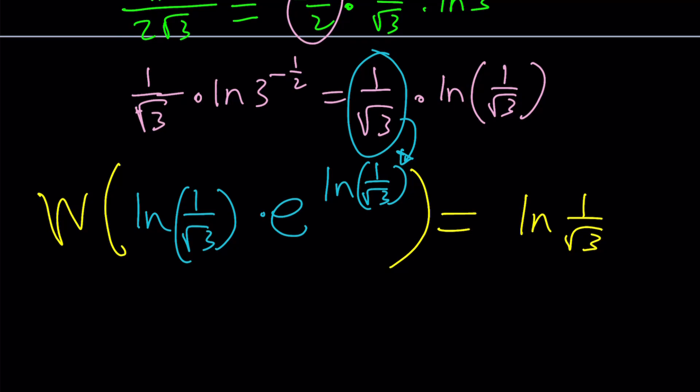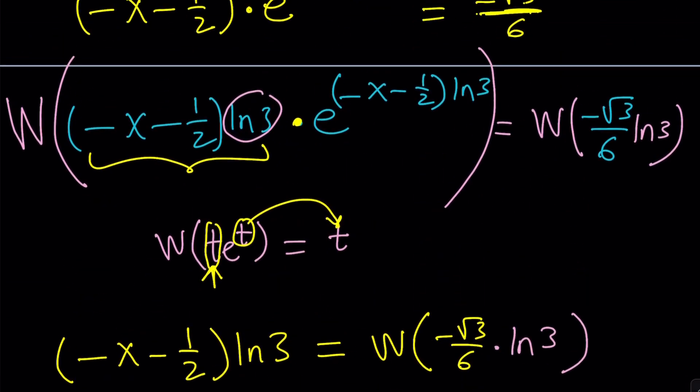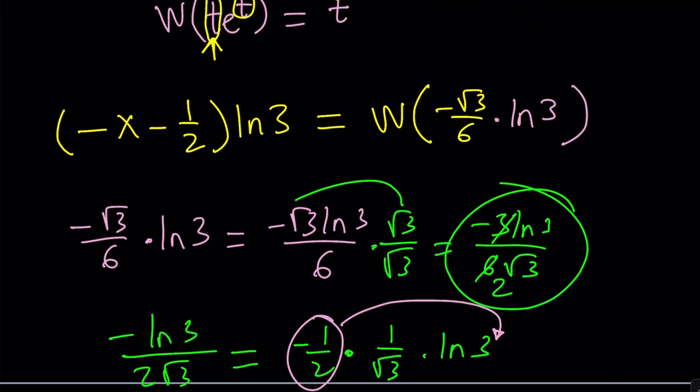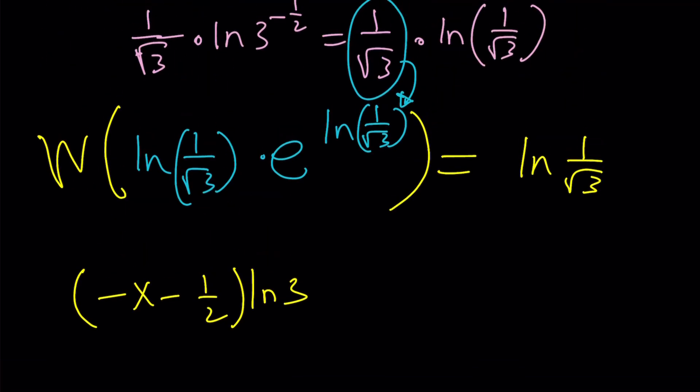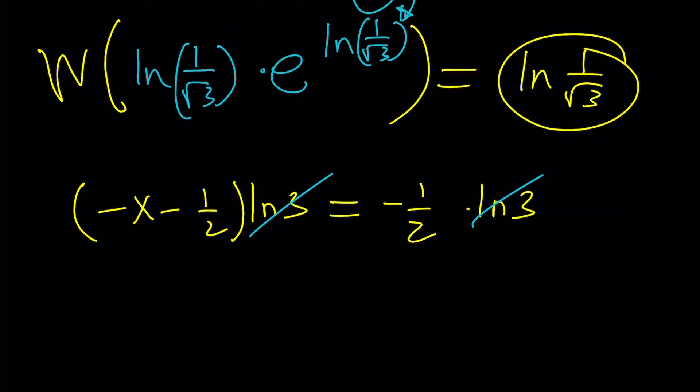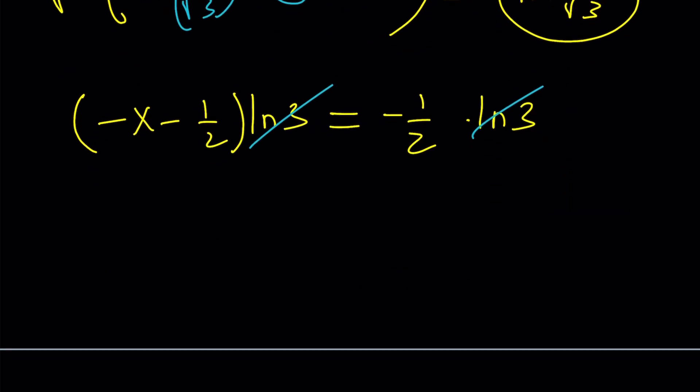Now, what I can do with this is I can just set it equal to the other stuff. What did I get from the other expression? I got this. Right? Negative x minus 1 half times ln 3. And then, this expression, and I could probably leave it at that, but this can be written as ln 1 over root 3 or negative 1 half times ln 3. And now, ln 3 cancels out, leaving us with this. If you add 1 half to both sides, you're going to get negative x equals 0, which probably means x equals 0. So, that's one of the solutions.